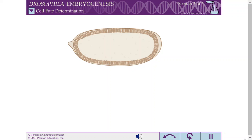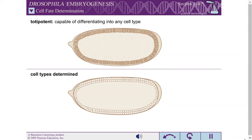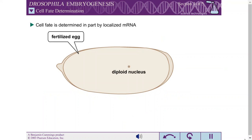When the nuclei reach the edge of the cell, they are totipotent, meaning they have not yet taken on a specific identity and can give rise to any cell type. Just after cellularization, however, the nuclei have been irreversibly determined to differentiate into specific tissues in the adult fruit fly. The location of each nucleus determines its fate.